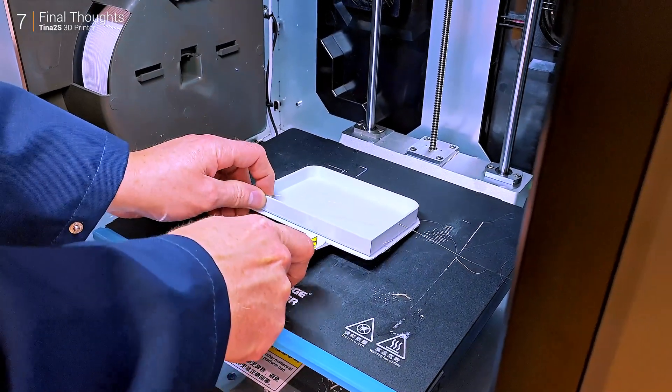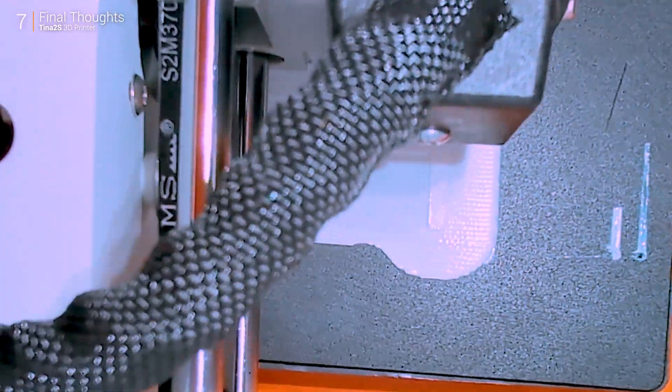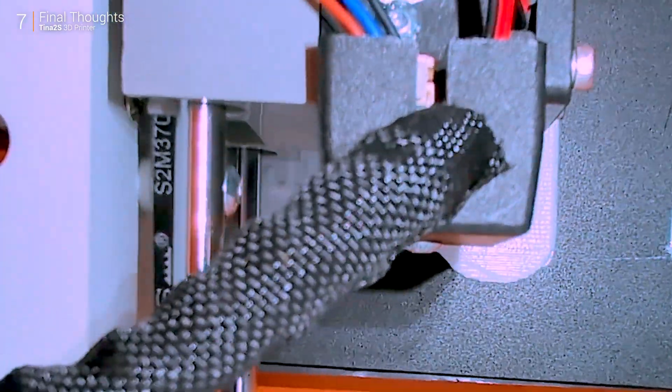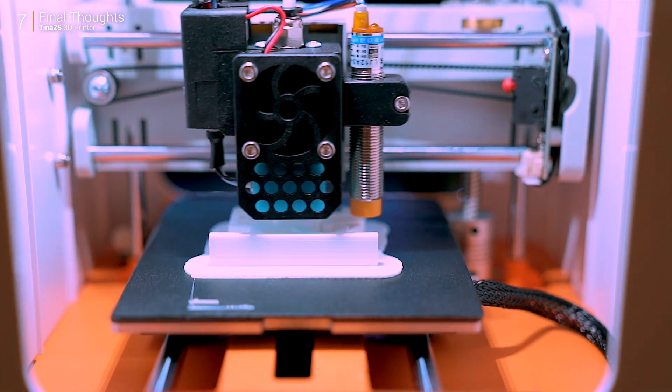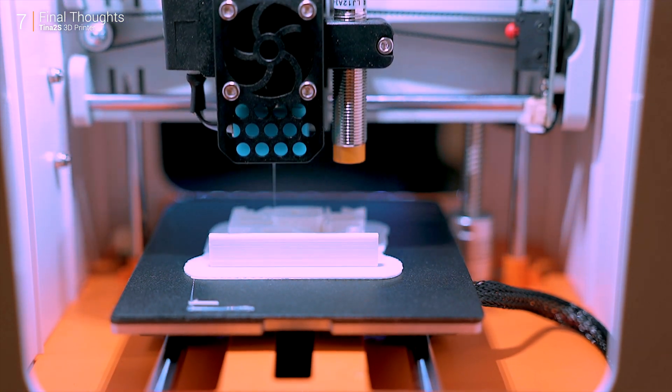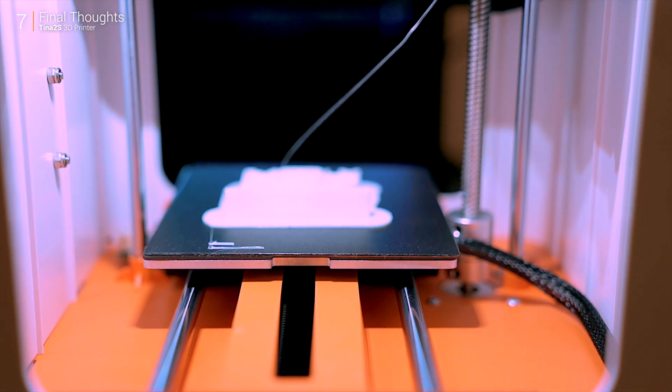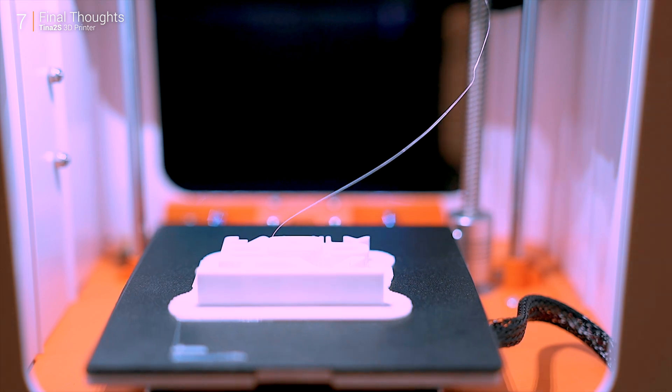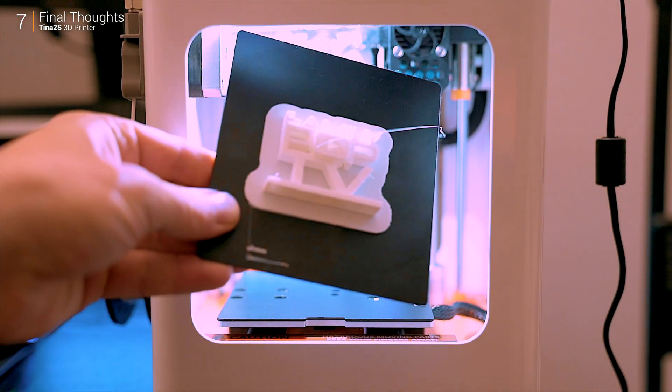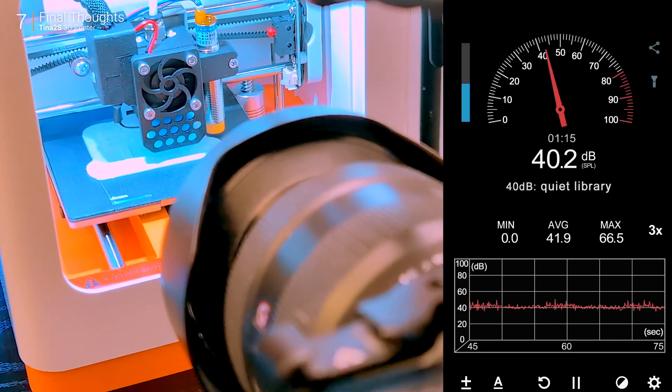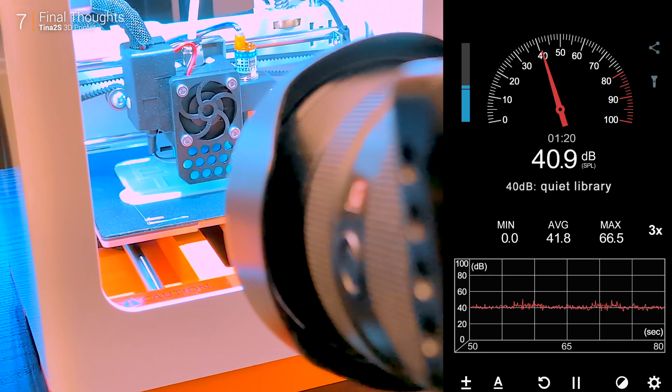At work I use a large 3D printer, but at home the TINA 2s handles quick small projects with ease. For around $200 US, its print quality is impressive. It works best with PLA—great for entry-level materials—but lacks a heated bed for ABS or other high-temperature plastics. The compact build volume is ideal for small parts or beginner projects, but it's not designed for large-scale prints. Noise levels are noticeable but not excessive. Silent stepper drivers would make it more suitable for shared spaces.